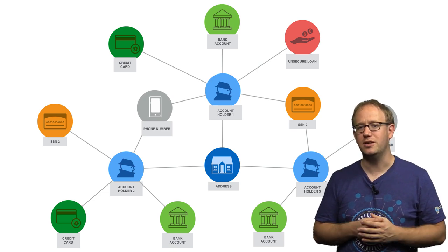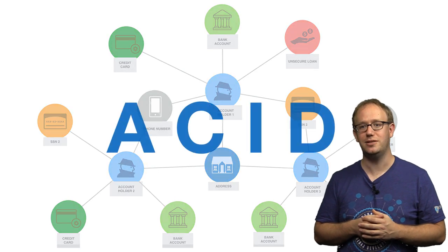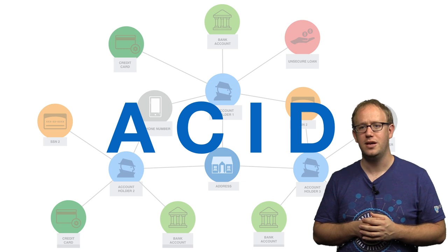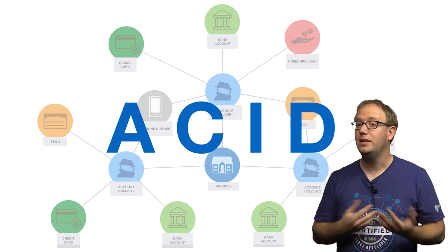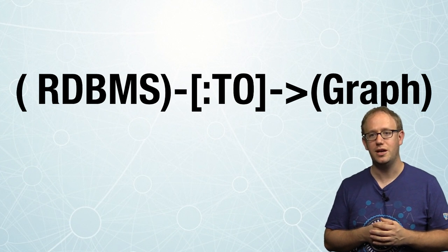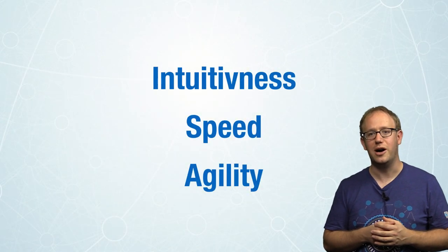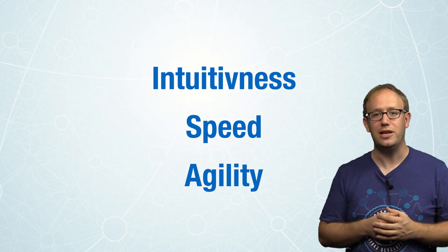Data integrity is important for many developers who care about data relationships. So we brought ACID back to at least one NoSQL database: Neo4j. This allows us to use Neo4j as a transactional data store, storing your most critical business data. Later in this series, we're going to show you how to move your relational database data into a graph database — a simple transition that will give you a more intuitive data model, faster queries, and better agility to adapt to changes in the business.